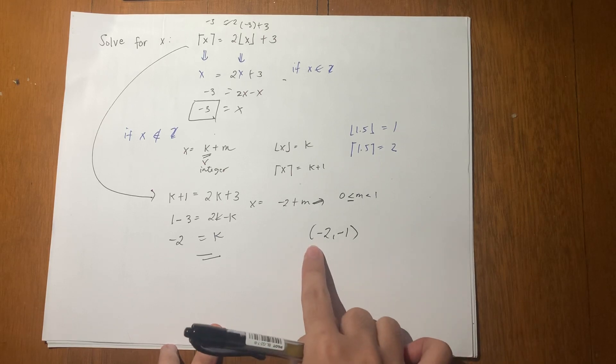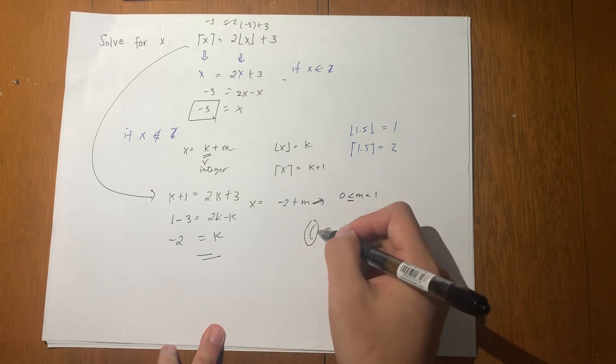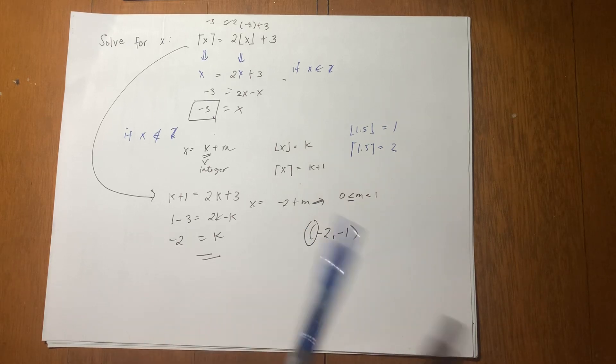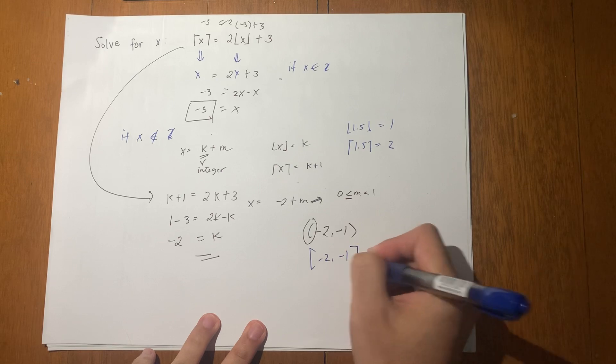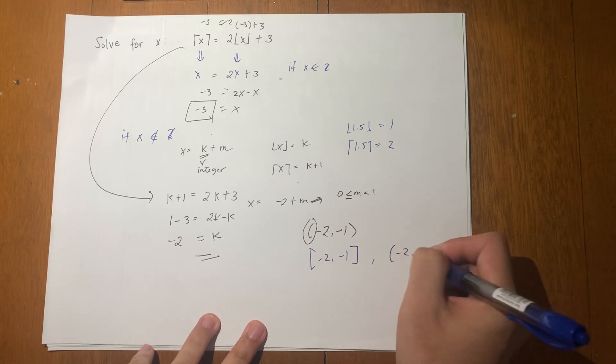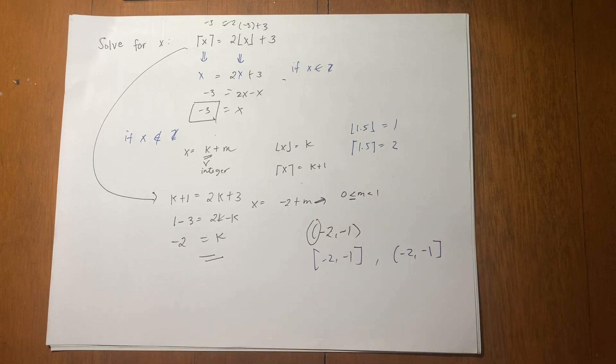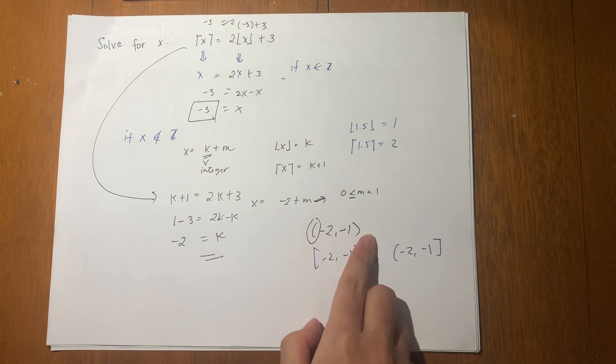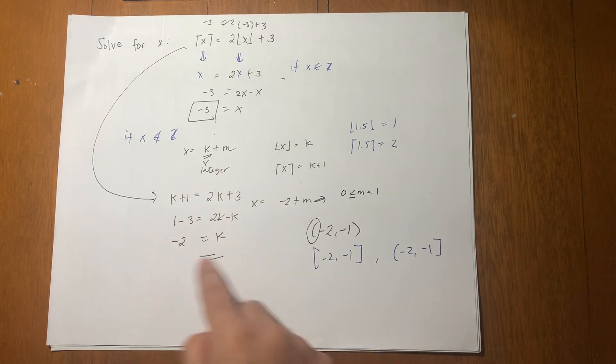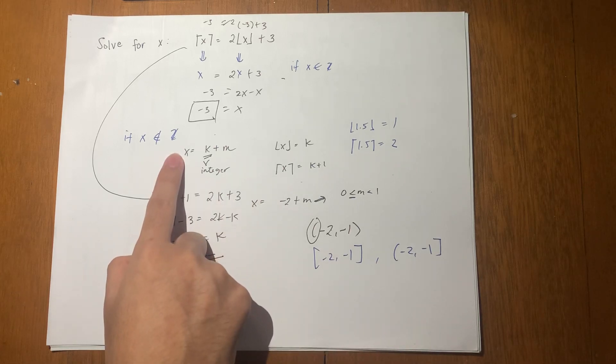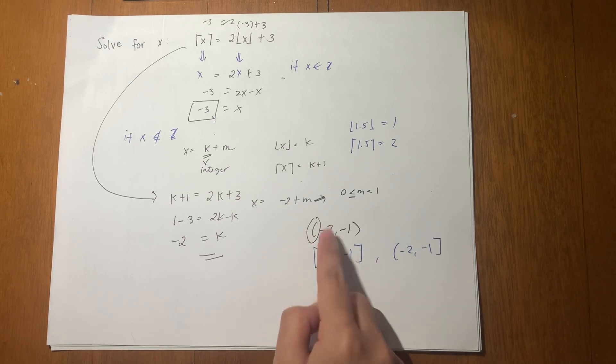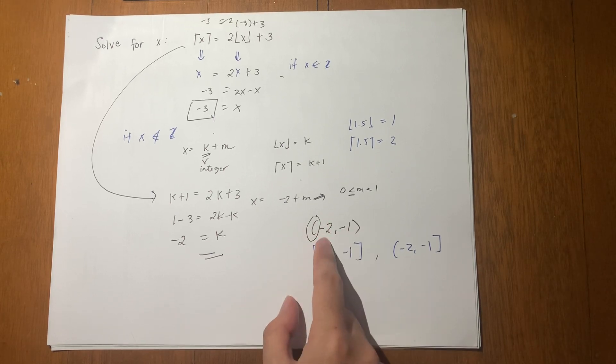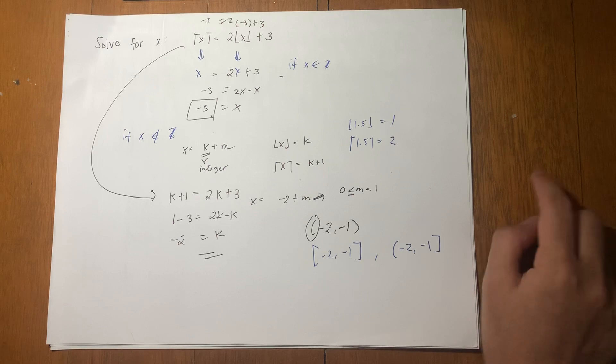So the question now is, should this be open or should this be closed? Should it be half open, half closed, and so on? The answer is, it's just open, both open. Why? Because from this solution, we have assumed that x is not an integer. So if you include this, then you are saying that x equals negative 2 and x is an integer, which is a contradiction to your assumption.